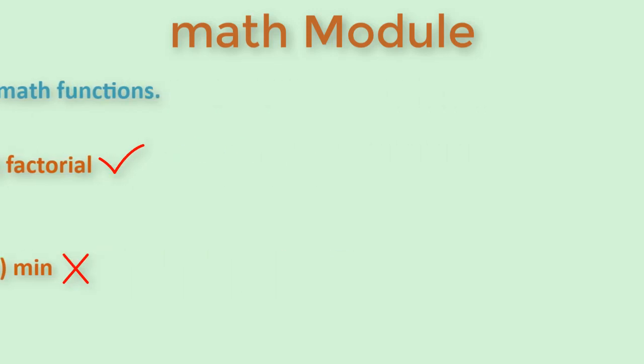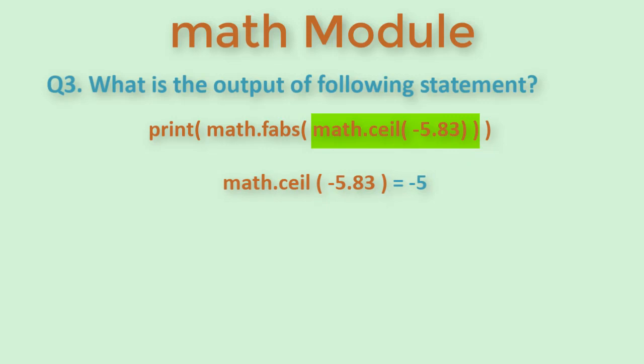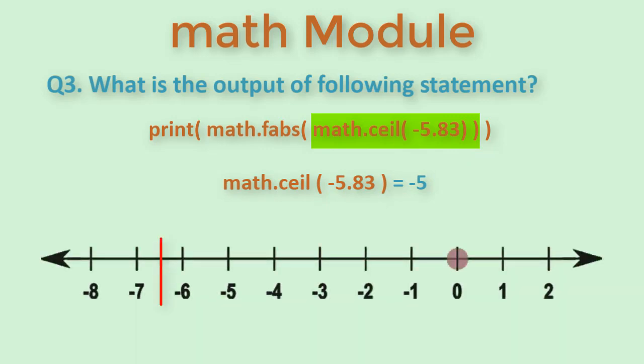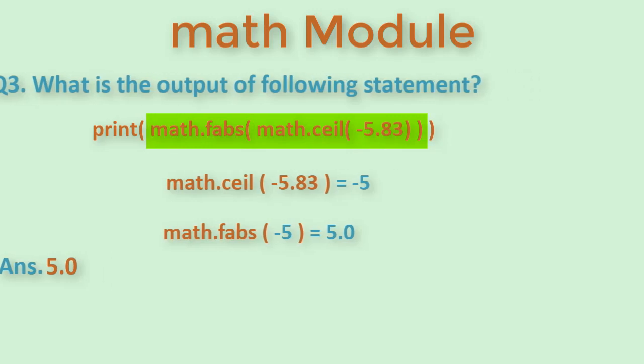Next type of question is where some combination of library functions are used and you are asked to predict the output. For example, take a look at this expression here. The question will specifically have negative values to check if you understand how it works. Here ceil function returns minus 5 as minus 5 is higher than minus 6 on a number line. Then it will calculate the absolute value of minus 5 and return 5.0.